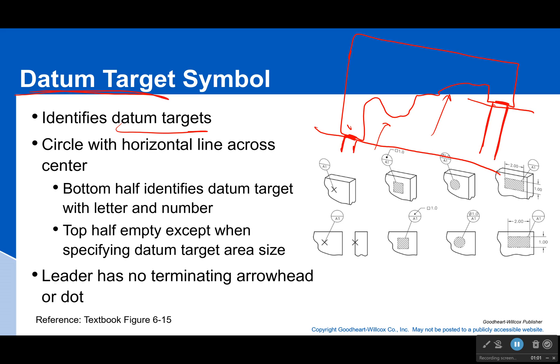I would have to show them how you want to support it. You would use one of these symbols — either a circle, a square, or a rectangle — to say I want it supported on the area, or you use this little X to say I want you to support it on just a single point. A dome would touch something at a single point if it's a perfect dome.